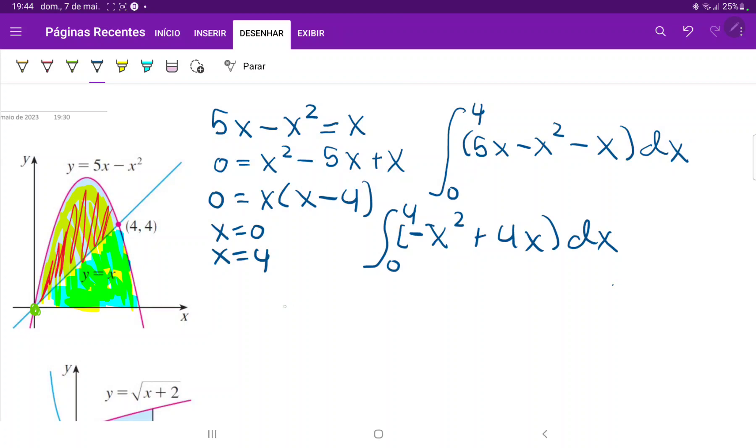So when we integrate it, we get minus x cubed over 3 plus 4x squared over 2. And then we are going to evaluate it at our boundaries. So this is equal to minus 4 cubed over 3 plus 4 squared times 4. So that is also 4 cubed, so 4 cubed over 2.